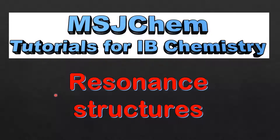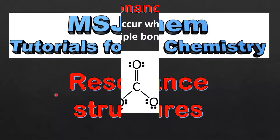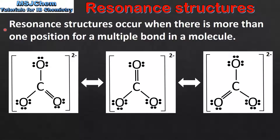This is MSJChem. In this video I'll be looking at resonance structures. Resonance structures occur when there is more than one position for a multiple bond in a molecule. A multiple bond can be either a double or a triple covalent bond.